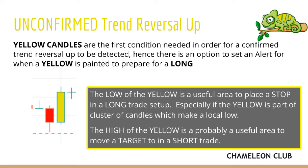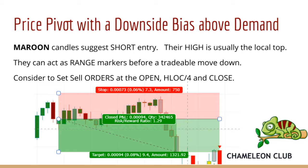As the documentation explains, the maroon candle has been chosen to indicate the strongest expectation of a down move within the software. Maroon candles suggest a short entry. We can trade off their high, which is usually the local top and is hence the place to set the stop.